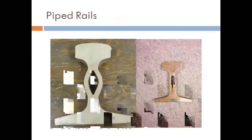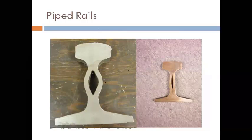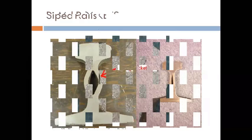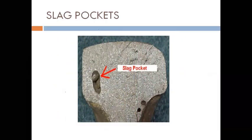Next is pipe rails. In this defect, the web is split into two parts — not the head nor the foot, only the web is split — forming a pipe shape. That is why these are called piped rails. Next are slag pockets, which again occur due to chemical composition during manufacture.